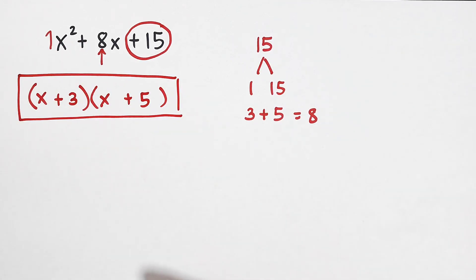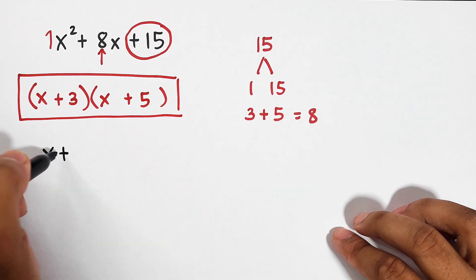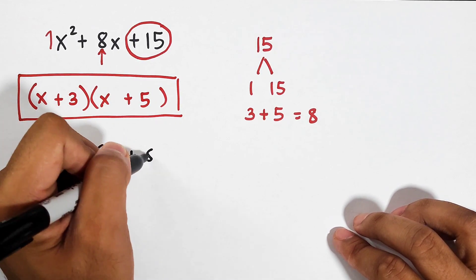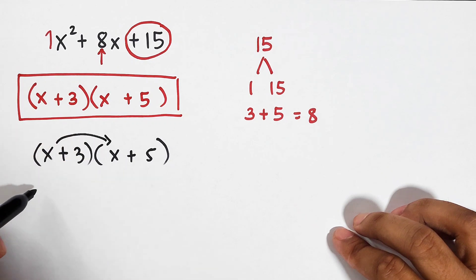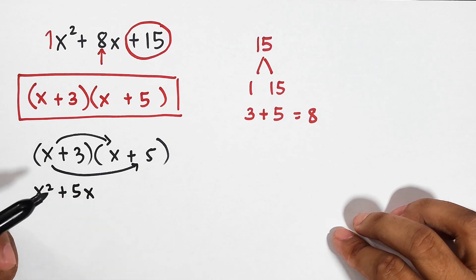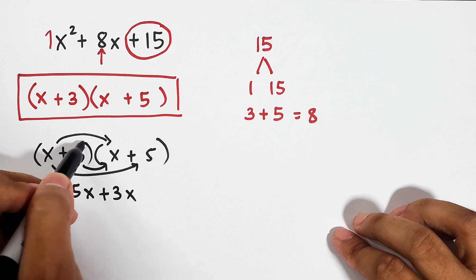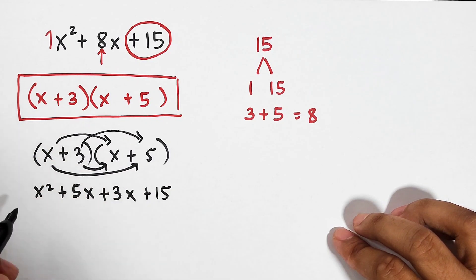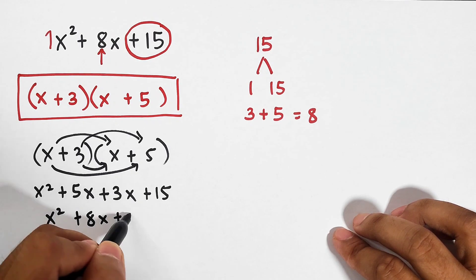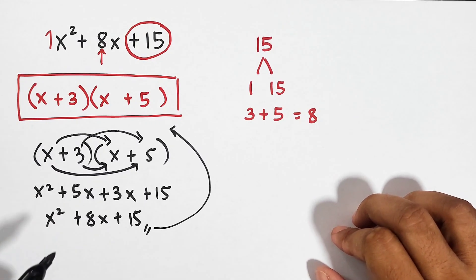Now if you want to check whether your answer is correct, you can do multiplication by the FOIL method. This is just the checking: x plus 3 times x plus 5. Multiply this — x squared, then x times 5 is plus 5x, 3 times x is plus 3x, and 3 times 5 is plus 15. That gives us x squared plus 8x plus 15. As you can see, we have the same answer, so definitely this is our factors.